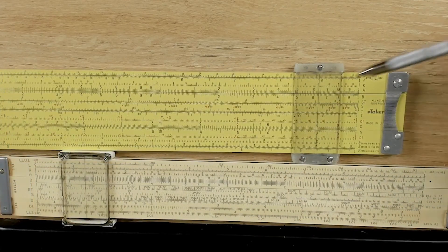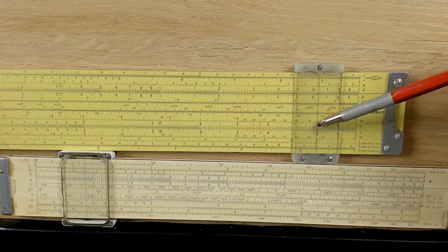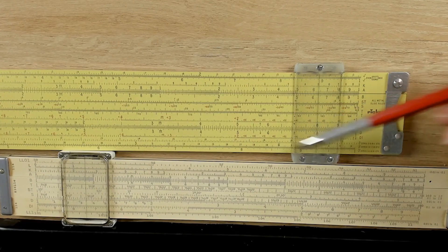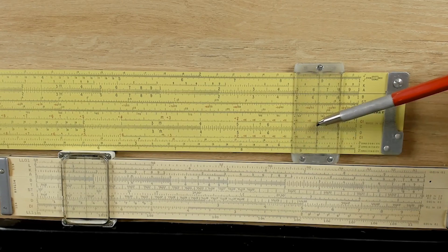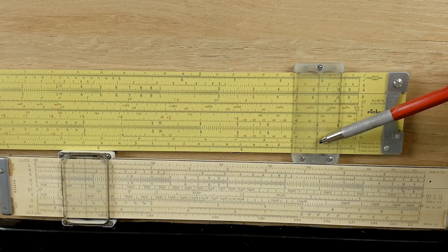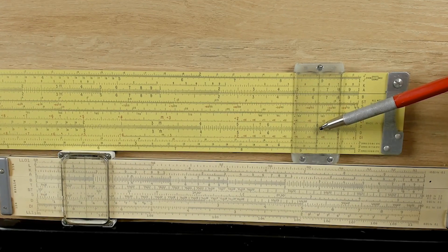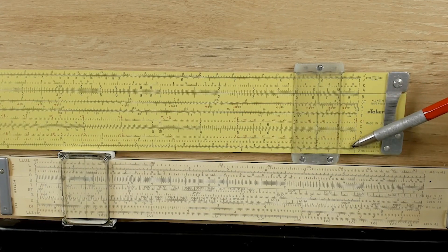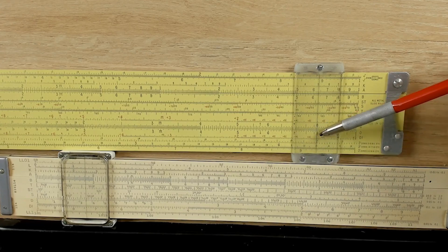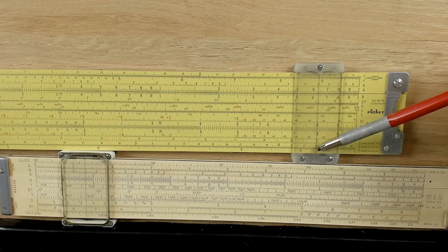So, let's take an example here. If we put 8 on the C scale and we read down to the cube root, that'll be on the first scale because 8 is between 1 and 10. And our answer is 2. Now, what about 80? 80 is between 10 and 100, so we'll look at the second scale. And the cube root of 80 will be 4.29, it looks like.